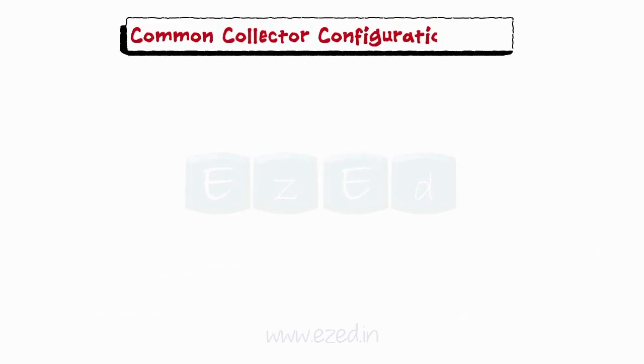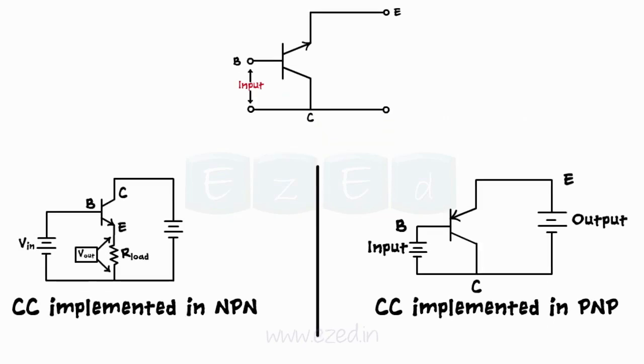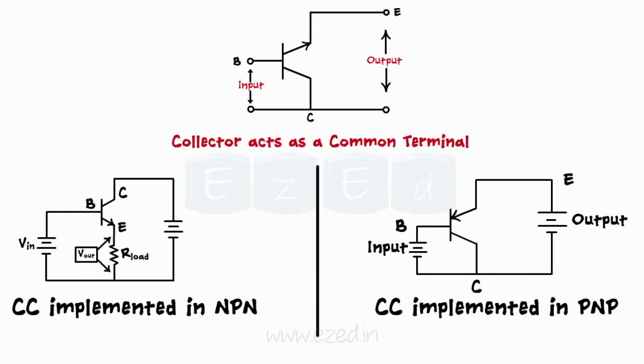In the common collector configuration, the input is applied at the base-to-collector junction and the output is obtained at the emitter-to-collector junction, making the collector the common terminal.